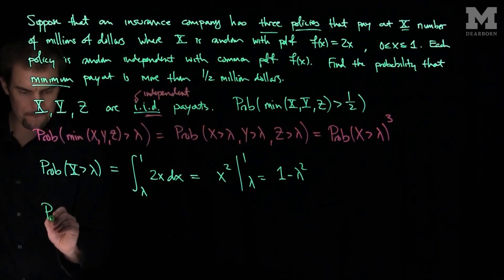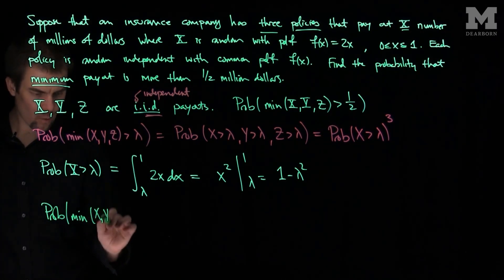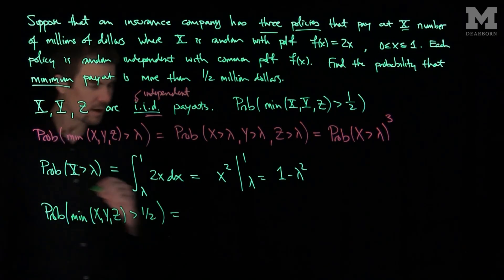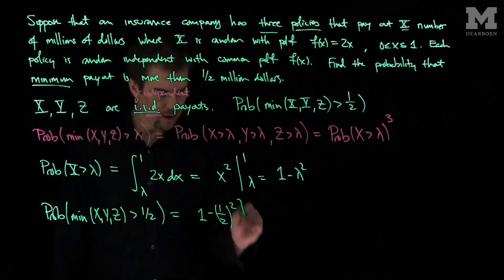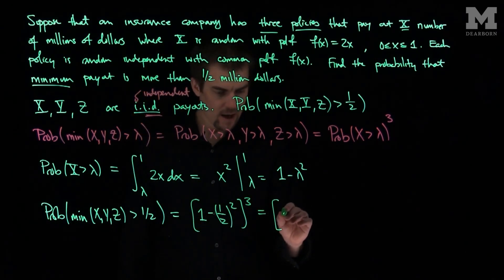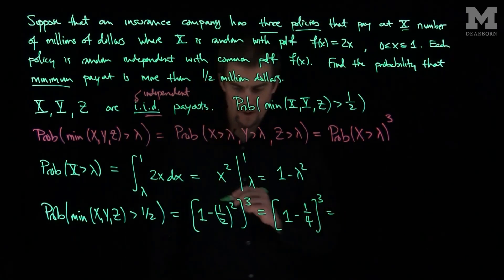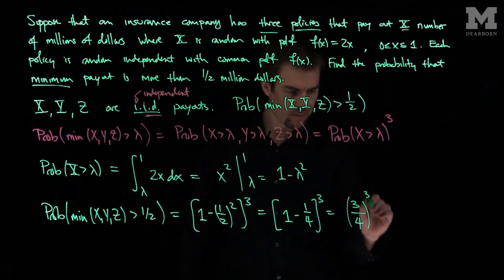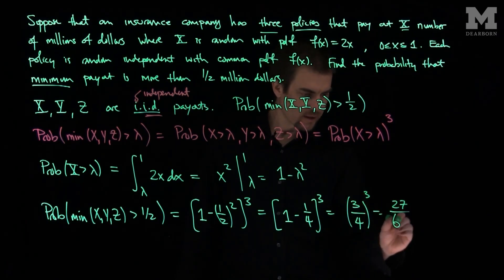So the probability that the minimum of X, Y, and Z is bigger than 1 half is going to be equal to (1 minus 1 half squared) all to the third power. So if we simplify this, we're going to get (1 minus 1 quarter) to the third power. So that's going to be 3 quarters to the third power.